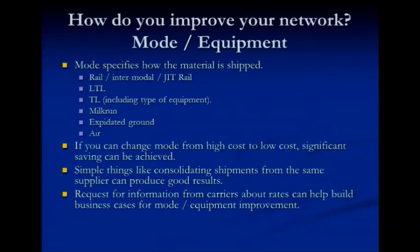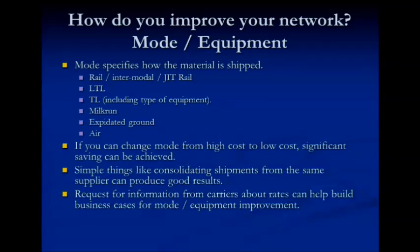Mode is huge. If you can do it, you want to ship in the cheapest mode possible, taking into account inventory considerations. If I can switch from truck to rail, you're going to save about a third to a half. If I can switch from LTL to multi-stop truckload, you're going to save 70 or 80%. If you can get rid of air and ship it ground, you're going to save a lot. Changing from a high-cost mode to a low-cost mode is a great opportunity.